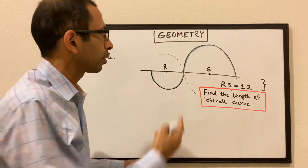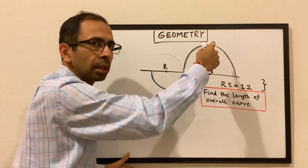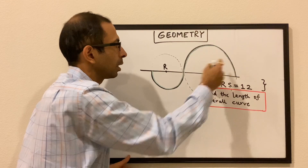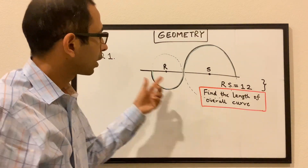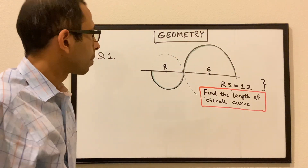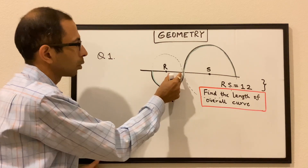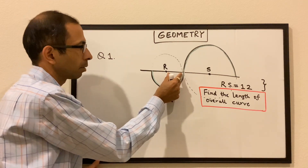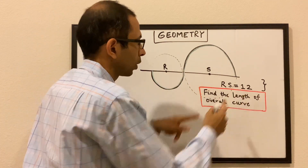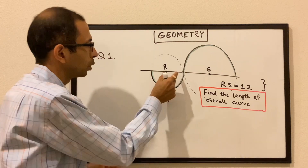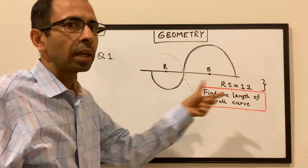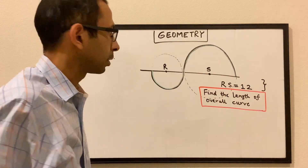Similarly, let's find the circumference of this bigger circle and then divide by 2 to get this length, and then we can add both the lengths to find the overall curve. The catch here is that we do not know this radius — all we know is that the length of RS is 12, but we don't know these two lengths, so we don't know the radius of any of these circles.